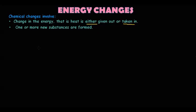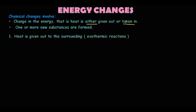We can tell whether a new substance is formed by observing changes: we may see bubbles because some gases are formed, or a new solid is formed, or there is a color change. These things can confirm that a chemical change has taken place.